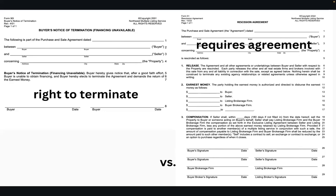Also close to Form 51 is Form 50. If you do terminate and you want to make sure the earnest money comes back to your client, you need to have a Form 50 signed with your termination that tells escrow where to put the earnest money — hopefully back in your buyer's pocket.